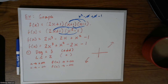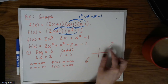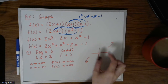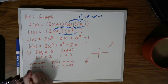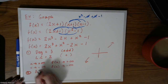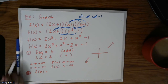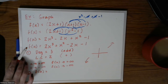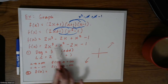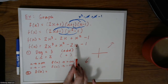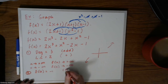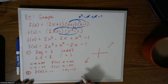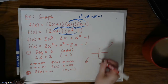I just went ahead and reordered things in descending order, then walked through the steps for sketching. I know the end behavior will go up to the right and down to the left. For step two, I'll plug 0 into the factored form — that wipes out the x terms and leaves negative 1. So the y-intercept is at (0, negative 1).